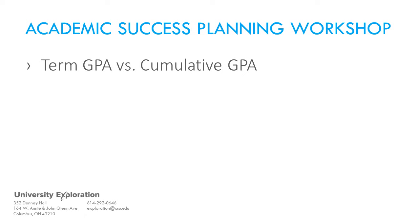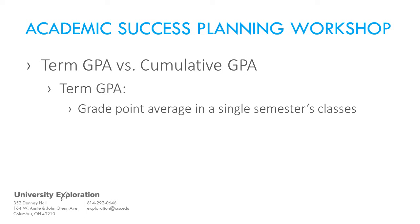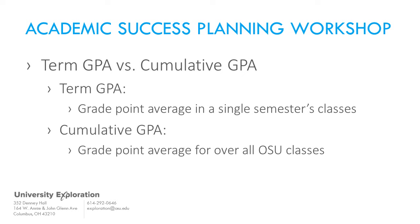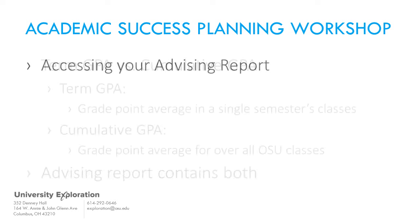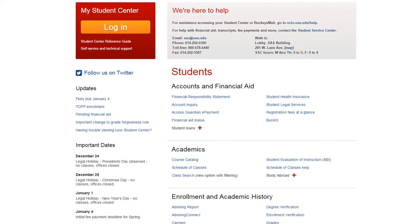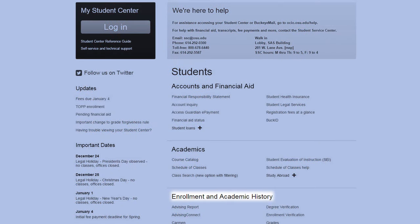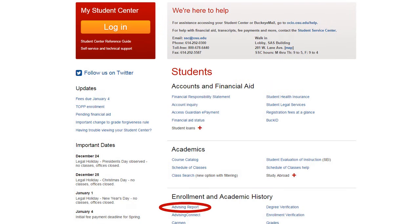You will hear the words term GPA and cumulative GPA frequently throughout this presentation. Your term GPA is your grade point average for a specific semester's classes. Your cumulative GPA is your grade point average for all of the classes you have taken at Ohio State. You can look up these GPAs on your advising report. To access your advising report, go to BuckeyeLink.osu.edu and scroll down to the section with the heading Enrollment in Academic History. Immediately under that heading, find and click on the advising report link, which will generate a PDF. Your university login will be required.